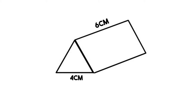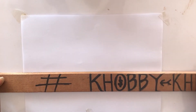Welcome back once again my people. Today we are going to talk about a triangular prism with a height of 6 and a base of 4, which means an equilateral triangle with each side of 4 cm. Now let's do it.